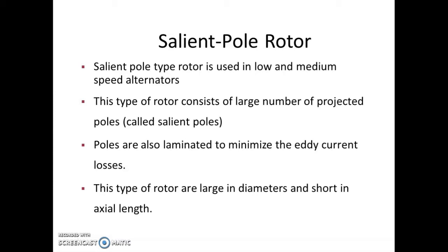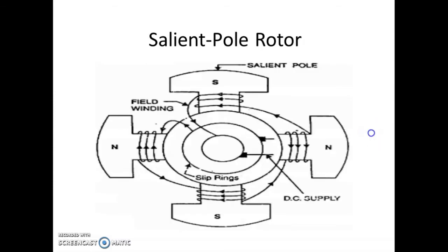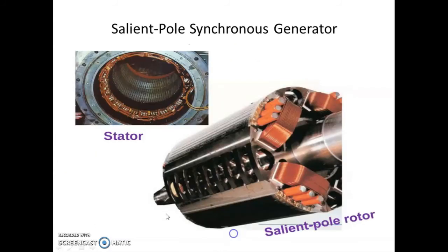Salient pole rotors are generally used for low speed or medium speed alternators. They have a large number of projected poles, ranging from two poles up to many poles, but always in pairs. The poles are also laminated to minimize eddy currents. These rotor types are of large diameter but short in axial length. This is an example of a four-pole salient pole rotor, with alternate poles: south, north, south, and north.